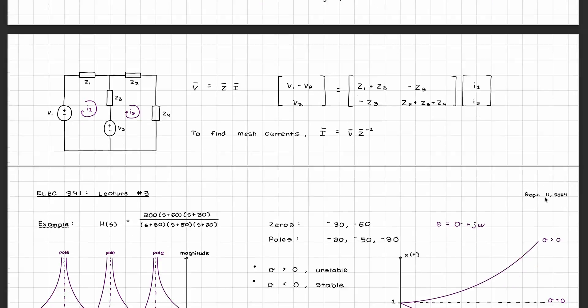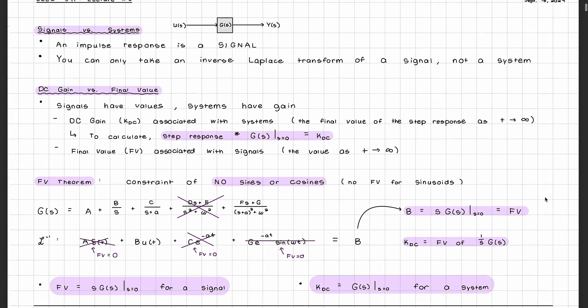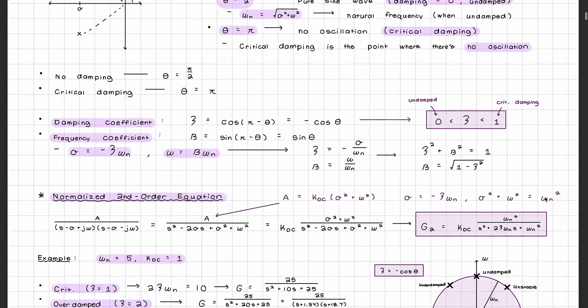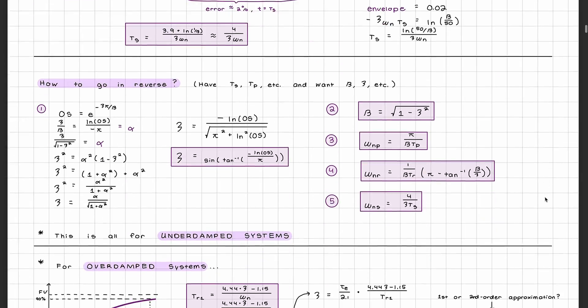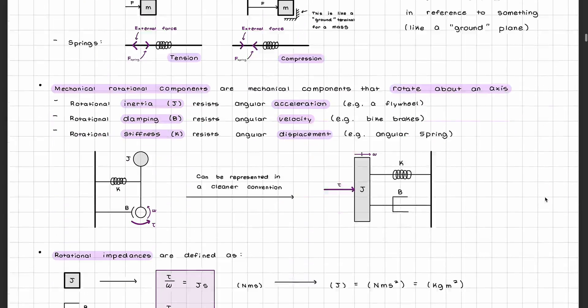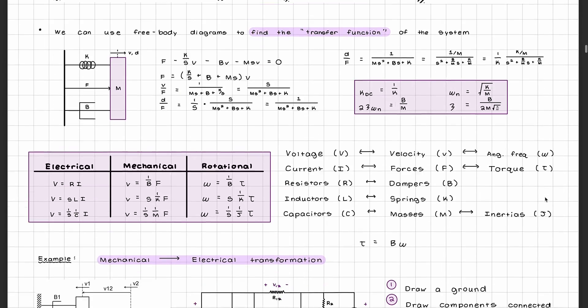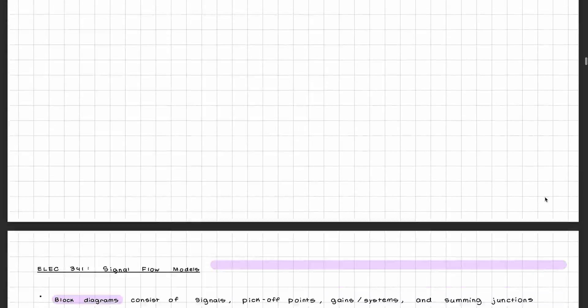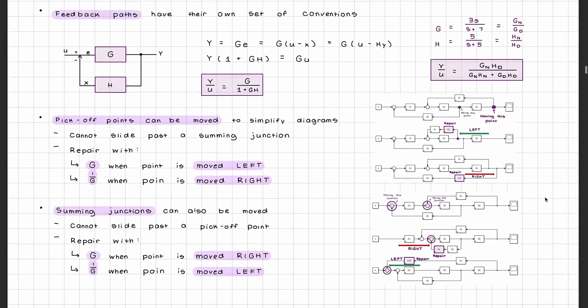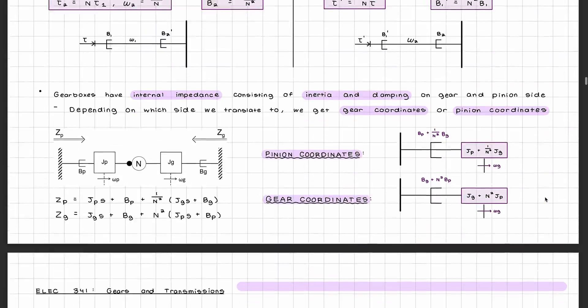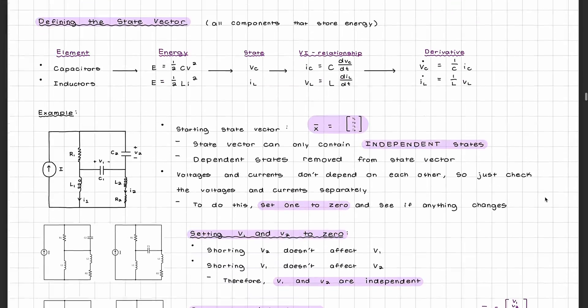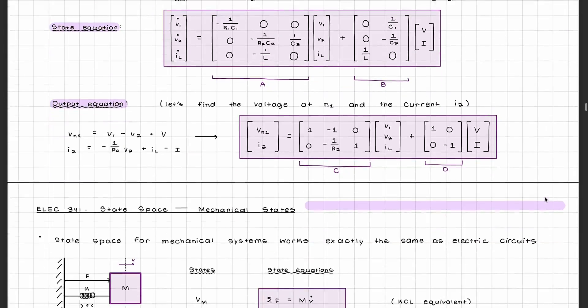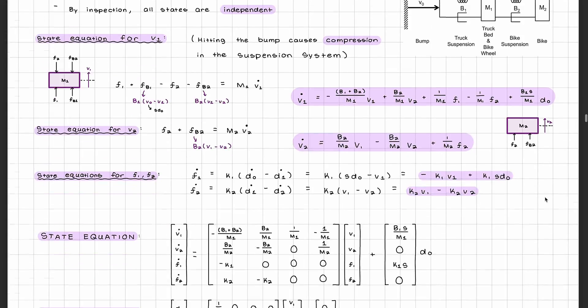The first half of the course is all about system identification. We're talking about how to model your subsystems with transfer functions, approximate transfer functions, second order systems and approximations, mechanical systems, and how electrical and mechanical circuits can be analogous to each other. You'll then use these subsystems to build full system models and incorporate concepts such as motors and transmissions, how to read and manipulate block diagrams, and how to represent your system using state space representation. This will bring you to the first midterm and the end of the first half of the course.